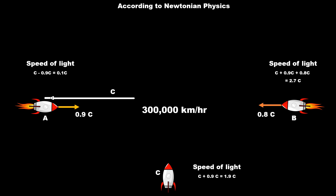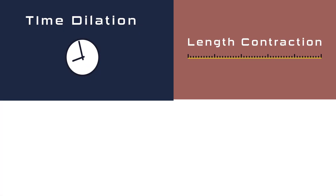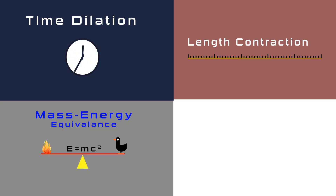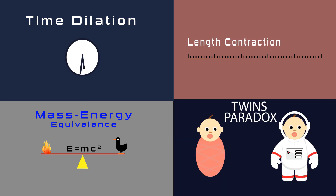Einstein's Special Theory of Relativity gives negligible results at low speed, while at high speed its results baffle the mind. Special Theory of Relativity predicts results at high speed which cannot be observed in daily life, such as slowing down of time, contraction of length, equivalence of energy and mass, and the most famous twins paradox. In this series on Special Theory of Relativity, we will discuss all of these in detail.